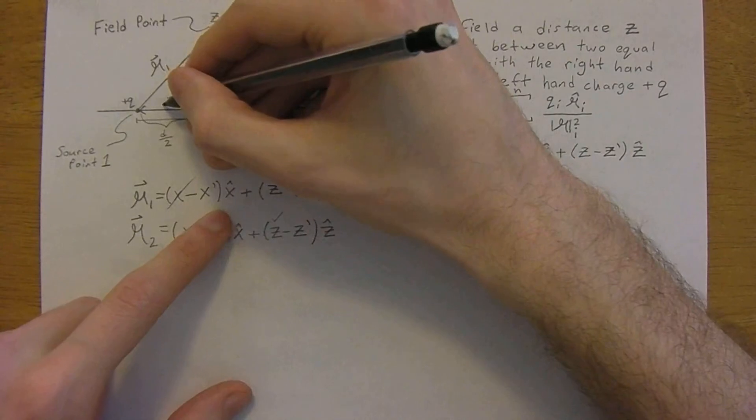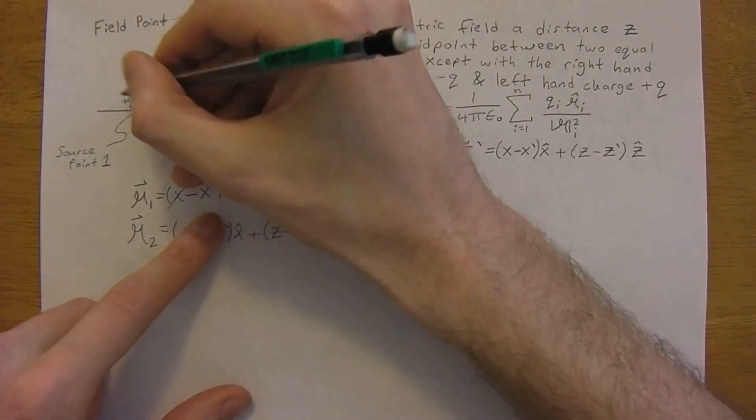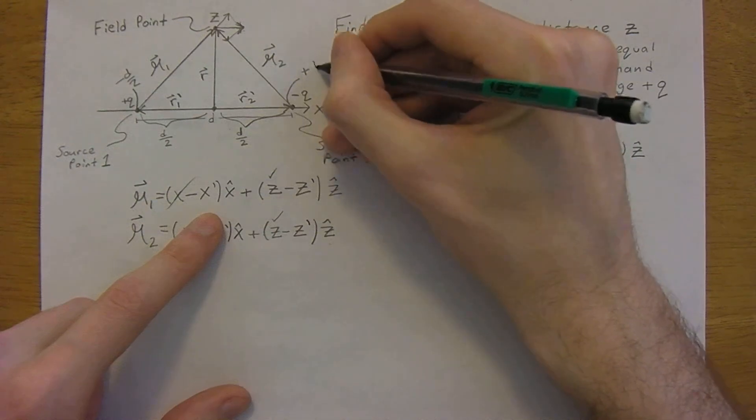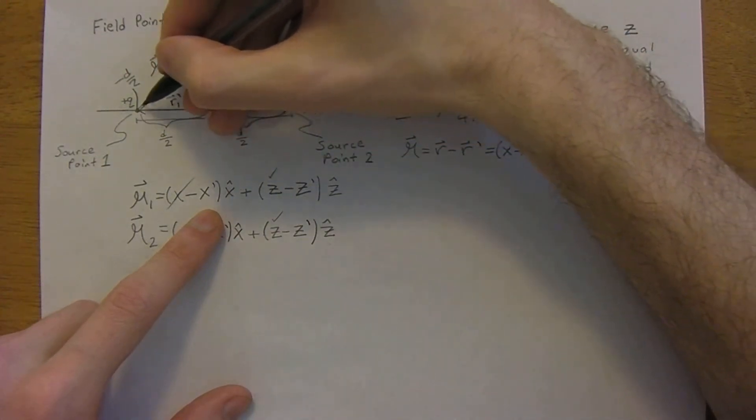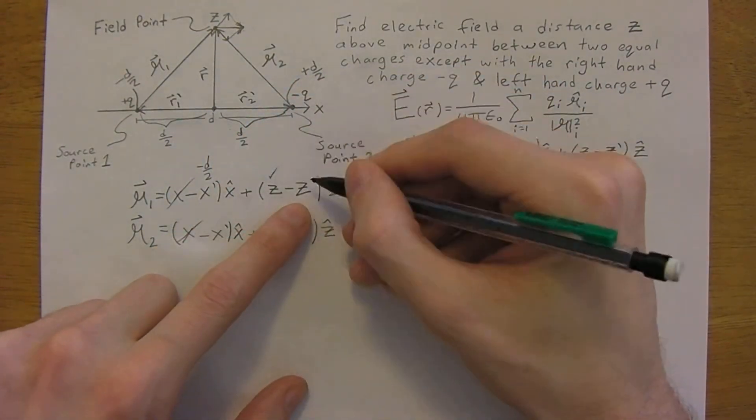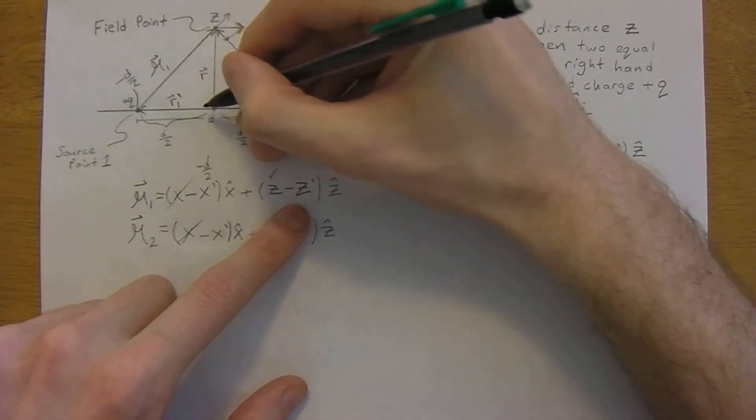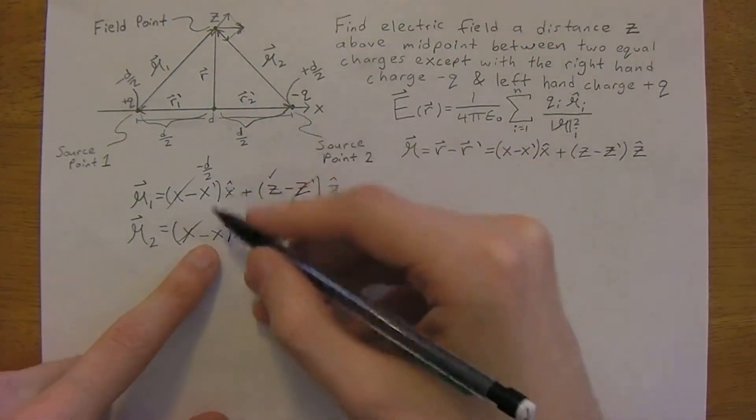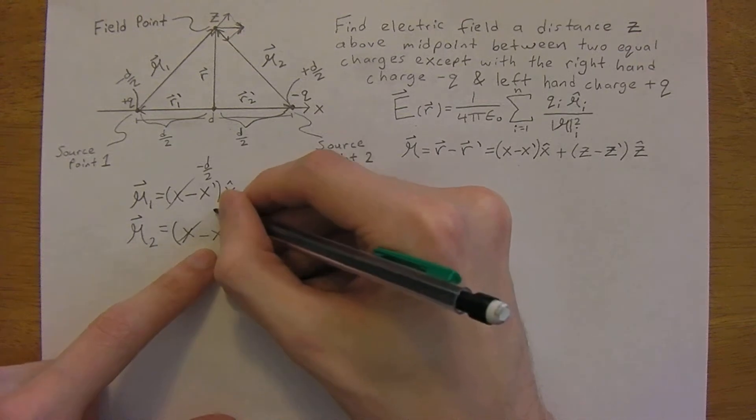So for r1 we're going to the left. Remember this whole distance here is d, so we take half that distance as d over 2. This is negative d over 2, positive d over 2. So we're working with r prime 1, so we're at negative d over 2. At z prime we actually don't have any because we're just at z equals 0 in this vector. And likewise in this vector we are at z equals 0, so we cross that off. And now here we are at, for r prime 2, we are at positive d over 2.